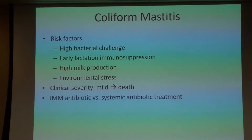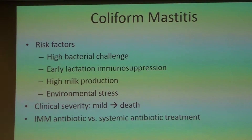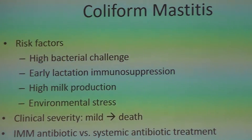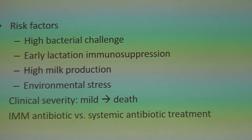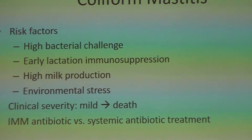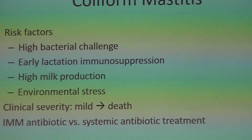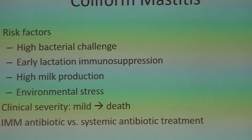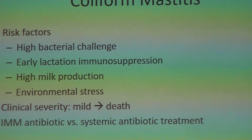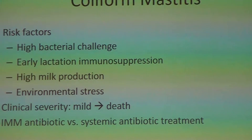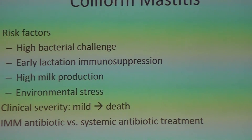Coliform mastitis is caused by gram negatives — E. coli is our number one cause, and we also have Klebsiella at certain levels on certain dairies. There are certain risk factors for coliform mastitis. One is high bacterial challenge. Cows make three products: milk, beef, and manure. Depending on farm management, manure can be a significant challenge, and manure has a lot of coliform organisms in it. I always tell producers my favorite mastitis prevention tool is a shovel.